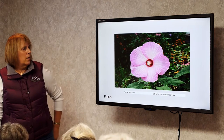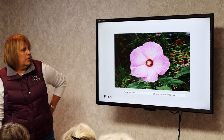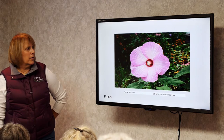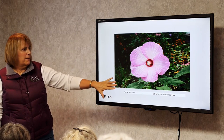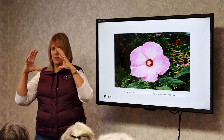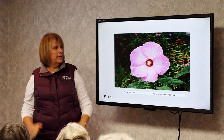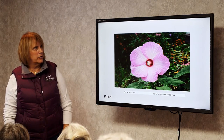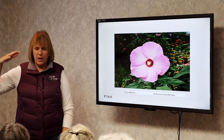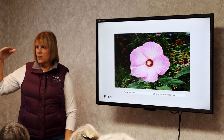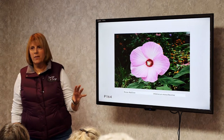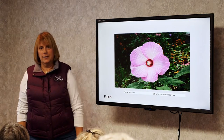Rose Mallow Hibiscus. There are a lot of hibiscus cultivars, but this is our native hibiscus. The flower is quite large and comes out in July and August. The total height of the plant is anywhere from four to six feet tall. It tends to like a little more moist soil and full sun.